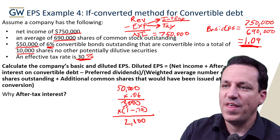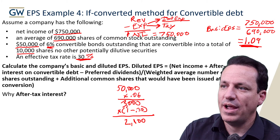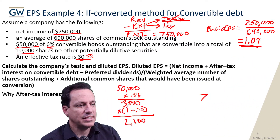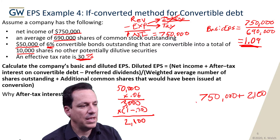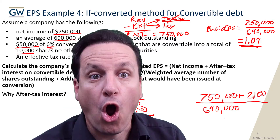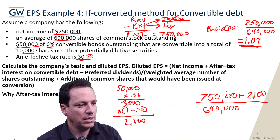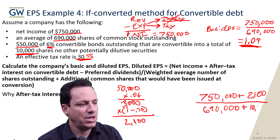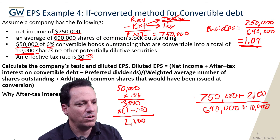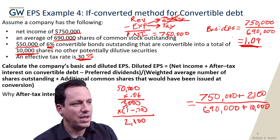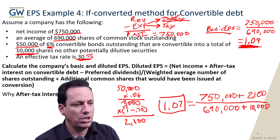So that $2,100 is going to increase our net income, because we don't have this interest expense anymore and we've taken the after-tax effect of it. So let's plug it in: $750,000 plus $2,100 being added back because we don't have any interest expense, over $690,000. But we're not done — don't forget, you have to give them their shares: the 10,000 shares. They don't just convert for nothing; they get their 10,000 shares. So the denominator becomes 700,000. Adding these together, basic EPS was $1.09, and the diluted EPS comes out to $1.07.